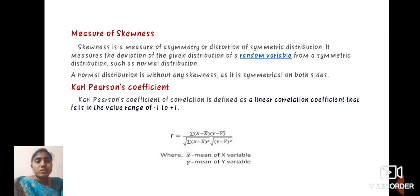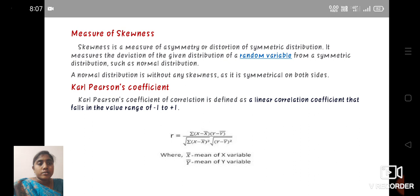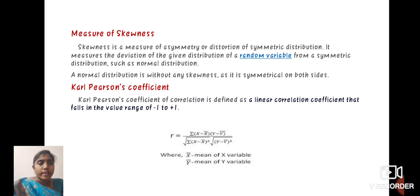Next, we define the Karl Pearson coefficient. The Karl Pearson coefficient of correlation is defined as the linear correlation coefficient that falls in the value range of minus 1 to plus 1. Then, R equals summation of X minus X-bar into Y minus Y-bar divided by the root of summation of X minus X-bar whole square and root of Y minus Y-bar whole square, where X-bar is the mean of X variable and Y-bar is the mean of Y variable.